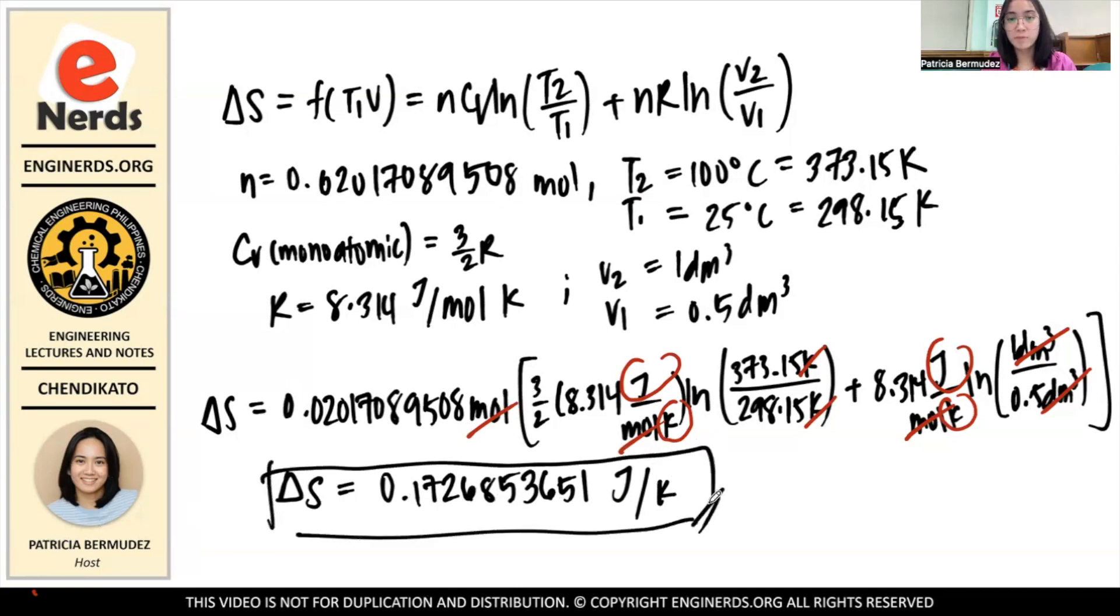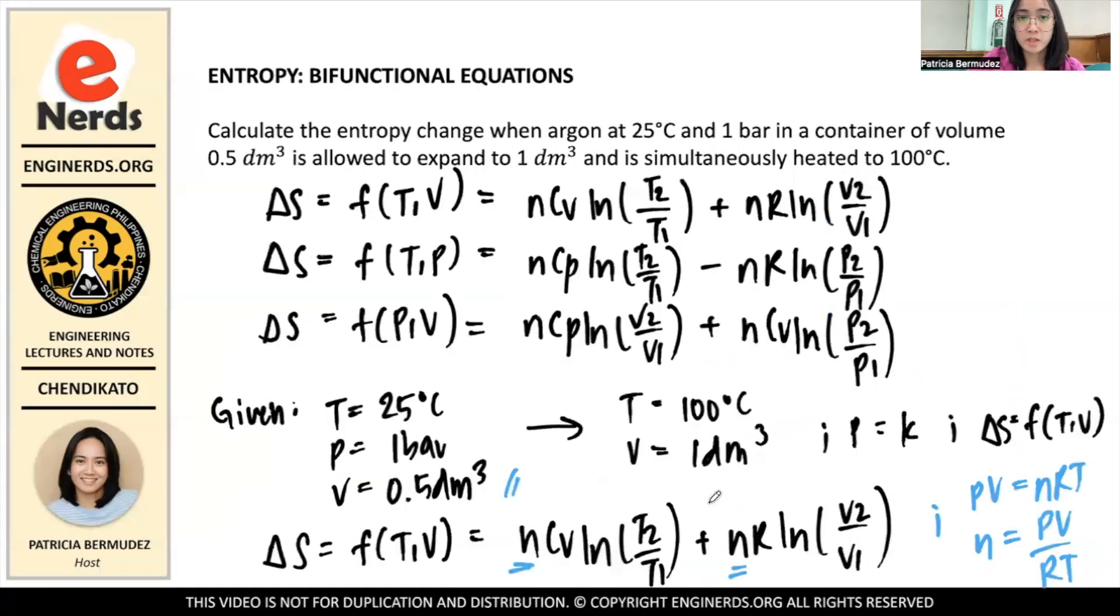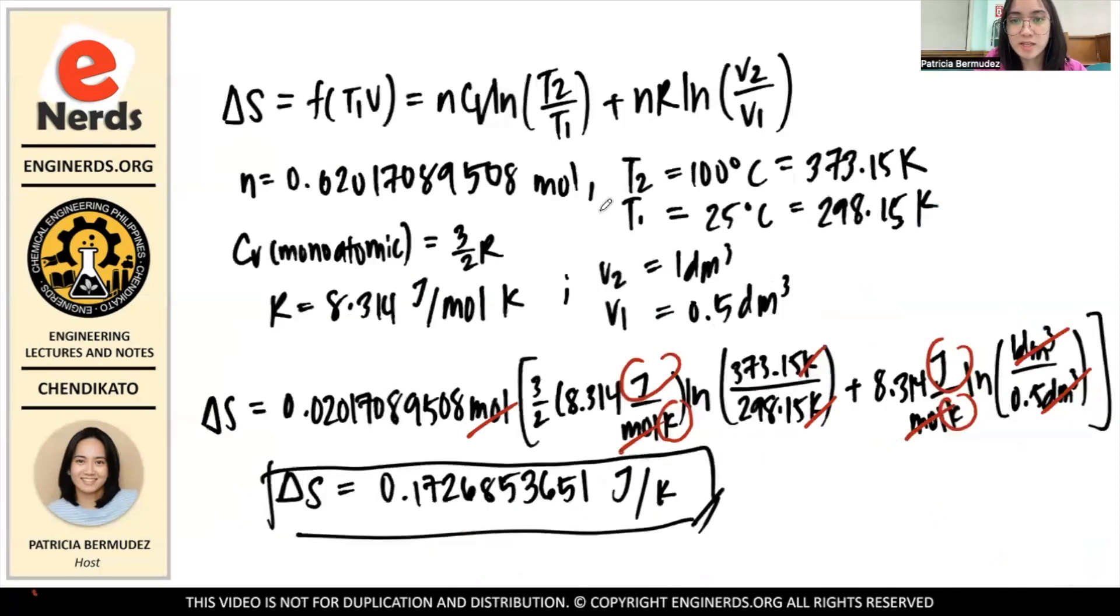So that is our solution for the problem. And if your question asks for the change in entropy in terms of pressure and volume, then you just use this equation. And if the question asks for the change in entropy in terms of change in temperature and pressure, then you use this equation. And you just follow the same steps - especially when your number of moles is not given, you just have to find that first and then substitute the remaining values to the equation. So yes, this is our solution for the problem. I hope you learned a lot from today's video. Thank you for listening, and take care for the next one. Bye bye.